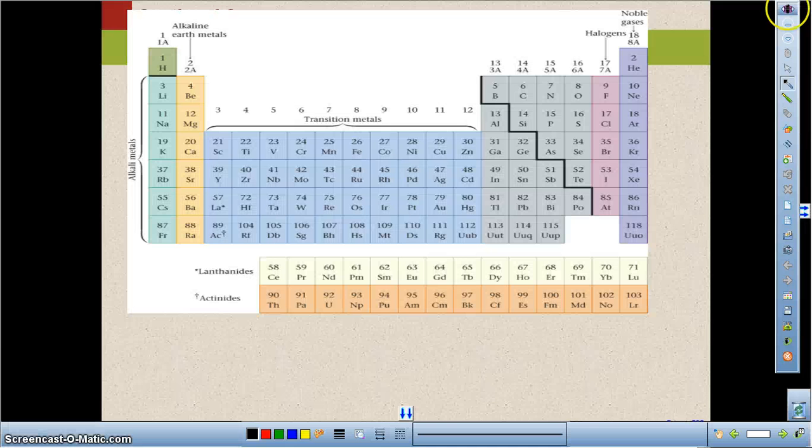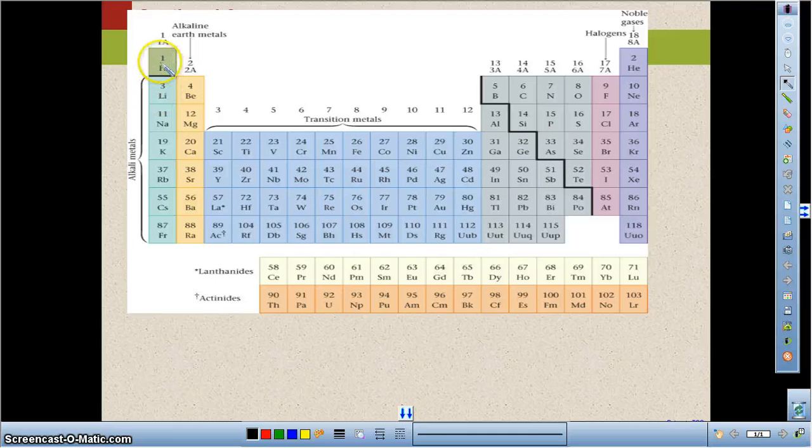Here's our periodic table. The atomic mass isn't shown on this one, but you notice the atomic numbers are. You see how the atomic numbers increase left to right. We notice that the ones in columns are considered our groups or families, and the ones that are horizontal are considered our periods.